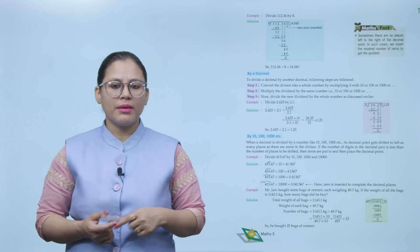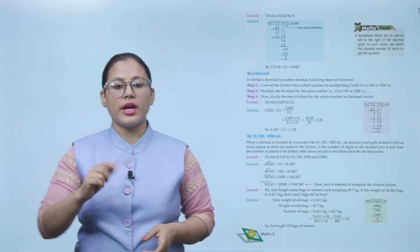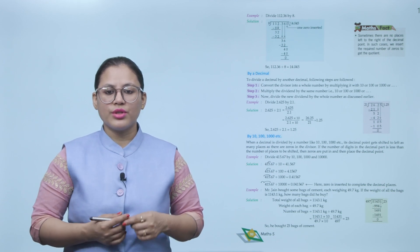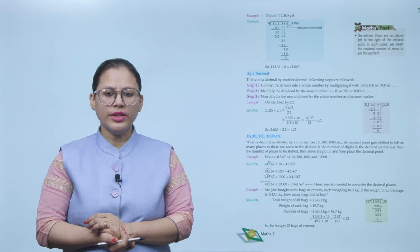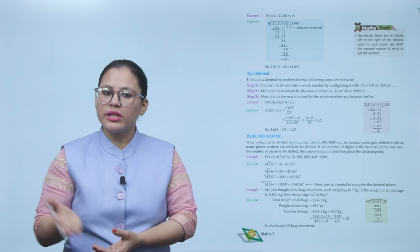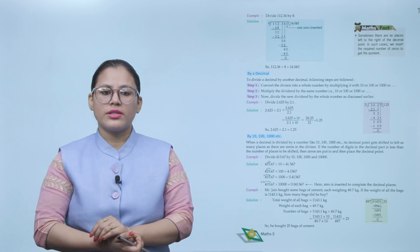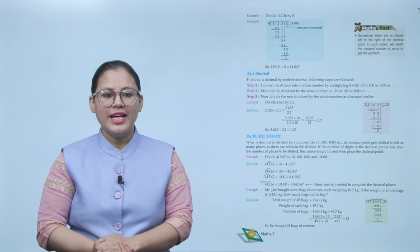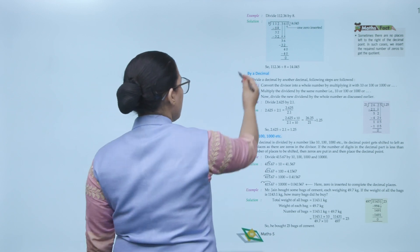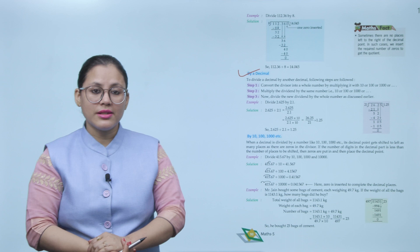Math fact: sometimes there are no places left to the right of the decimal point. In such cases, insert the required number of zeros to get the quotient. Now we've discussed dividing by a whole number — let's see how to divide by a decimal.